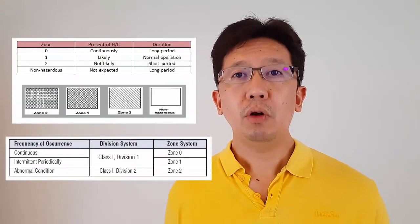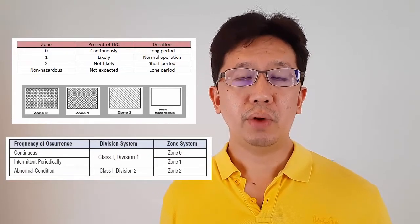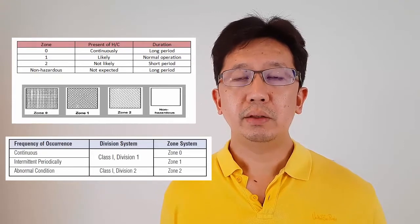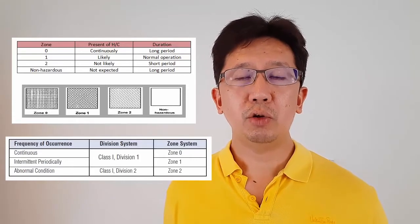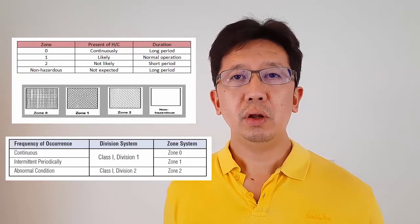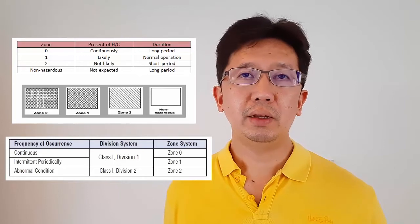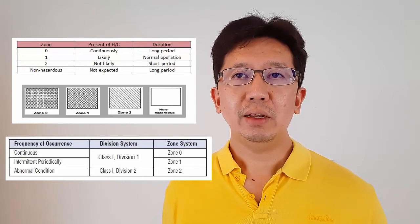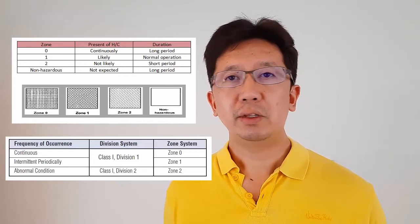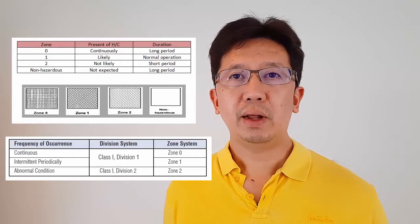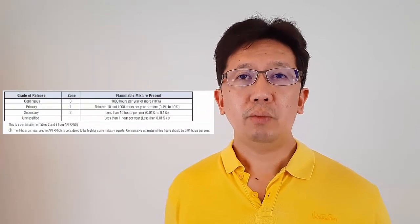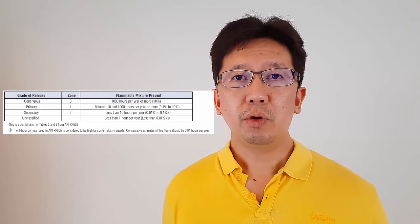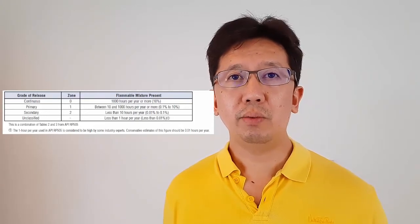The grade of release and frequency of occurrence are both factors related to each code. Based on IEC 60079, hazardous zones are classified by the frequency and duration of the presence of hydrocarbon in explosive concentrations. Zone 0: hydrocarbon is present continuously, with long duration. Zone 1: hydrocarbon is likely present during normal operation. Zone 2: hydrocarbon is not likely to be present, or only for short periods. Non-hazardous means hydrocarbon is not expected to be present for any significant period. For more precise determination of frequency, code IP 15 provides frequency values for different grades of release, as shown in the table.